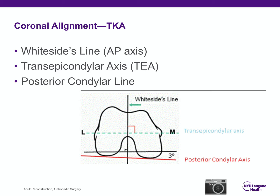Three key definitions: Whiteside's line — the AP axis of the femur when flexed, from the lowest point of the trochlear groove to the PCL insertion. The transepicondylar axis (TEA) — a line between the medial and lateral condyles. The posterior condylar line — connecting the lowest points of the medial and lateral posterior condyles. The posterior condylar axis is generally three degrees of internal rotation relative to the TEA, and Whiteside's line is perpendicular to the TEA by definition.